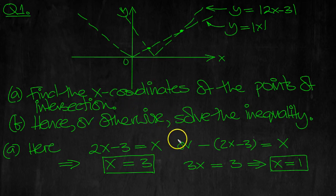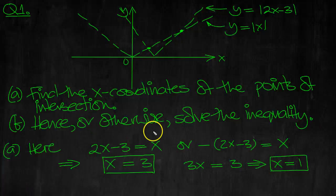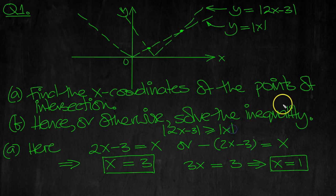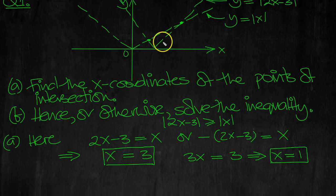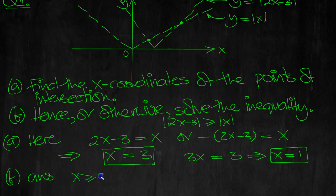For the inequality to hold — looking at the inequality, |2x minus 3| is greater than or equal to |x|. When is this line bigger than the modulus x? It would be bigger than or equal to from x = 3 onwards, because it's above. So part B: x is greater than or equal to 3.